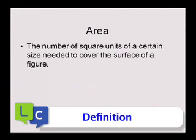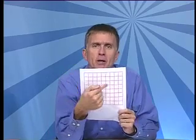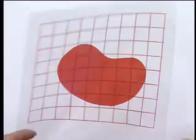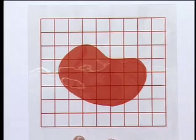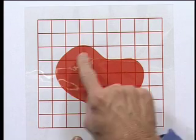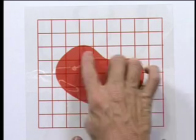We define Area as the number of square units of a certain size needed to cover the surface of a figure. The easiest way to make sense of that definition is to think of a piece of grid paper, like the one I've got over here. Say I wanted to know the area of this shape — I'd do the following: we'd start by simply putting down the shape, and then we'd take our grid paper and place it over it. Remember that we defined Area as the number of square units of a certain size needed to cover the surface of a figure.